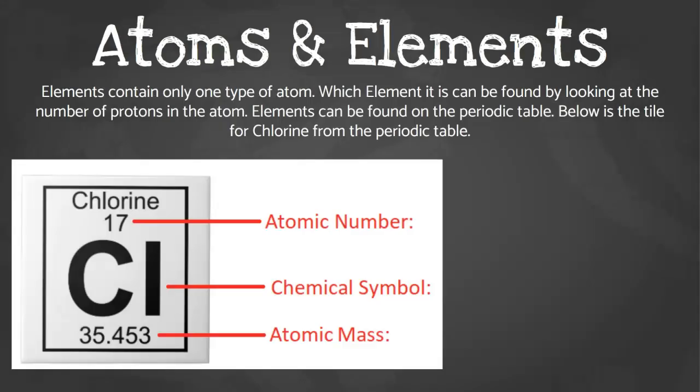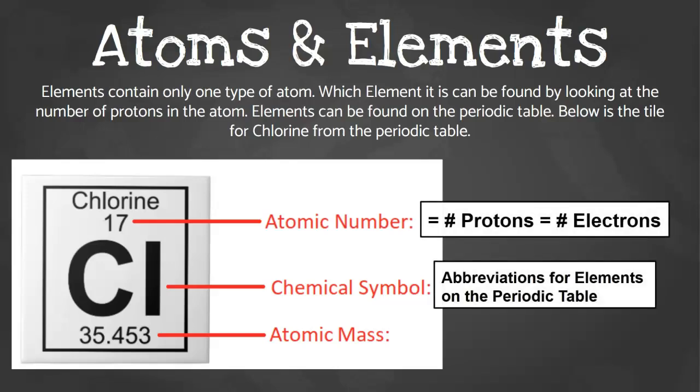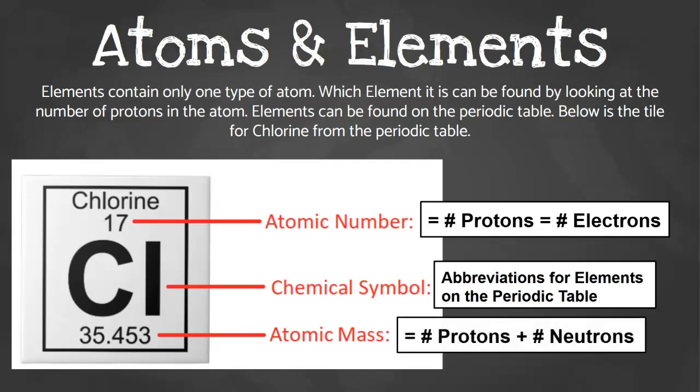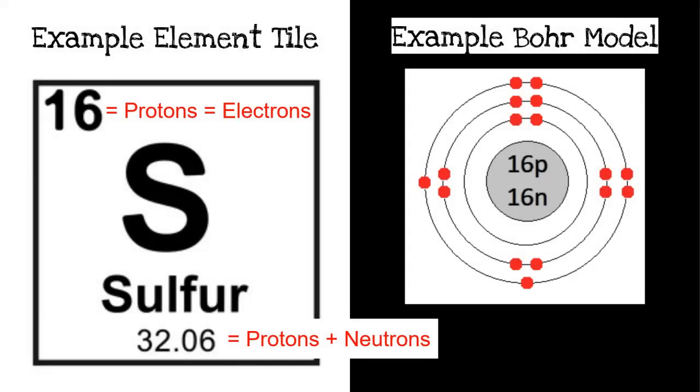So how do atoms relate to elements? Elements are only going to contain one type of atom. That's what makes it an element. Which element it is can be found by looking at the number of protons in your atom. If the number of protons change, the element changes. Elements can all be found on the periodic table. Below is the tile of chlorine from the periodic table, and just by looking at that single tile, you can find out a lot of information about that element. That top number is the atomic number, which is equal to the number of protons, which is also equal to the number of electrons, assuming you have a neutrally charged atom. The chemical symbol is just abbreviations for elements on the periodic table. So for chlorine, it's Cl, and each element has a unique chemical symbol. The bottom number is the atomic mass, which equals the number of protons plus the number of neutrons.